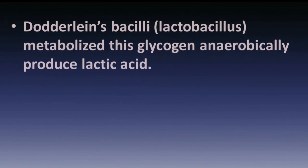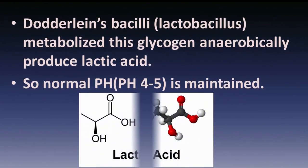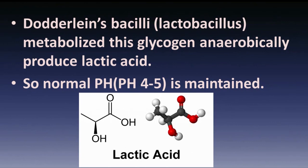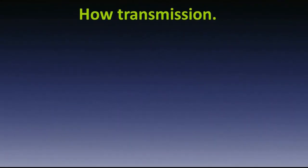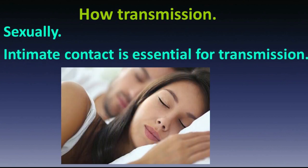Lactobacillus (Döderlein's bacilli) metabolizes this glycogen and produces lactic acid, maintaining a normal vaginal pH of 4.25. This pH inhibits the growth of the organism. For transmission, sexually intimate contact is essential.